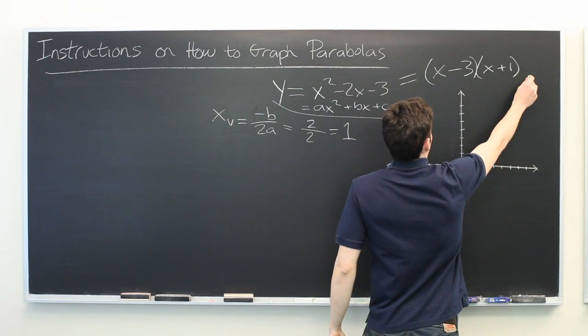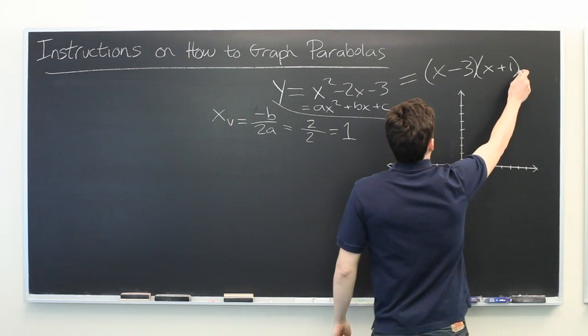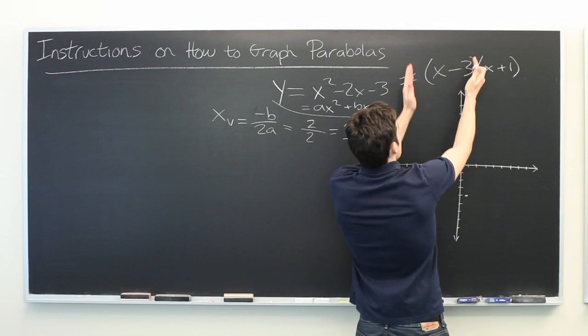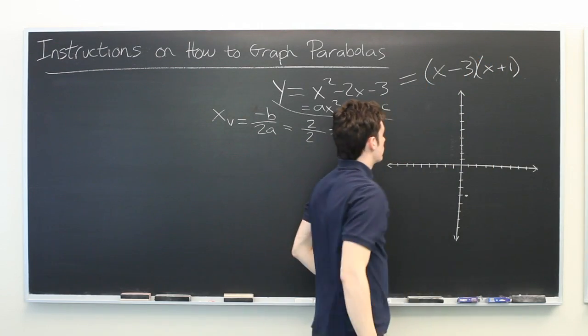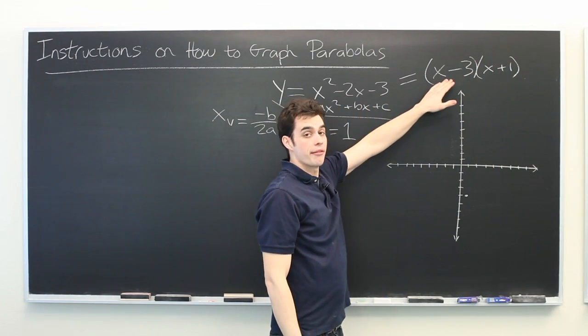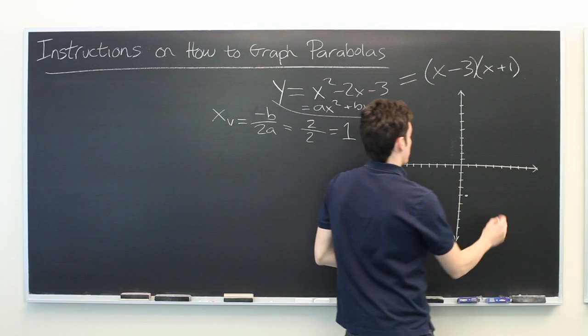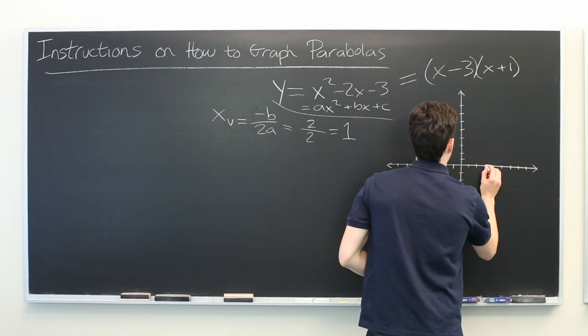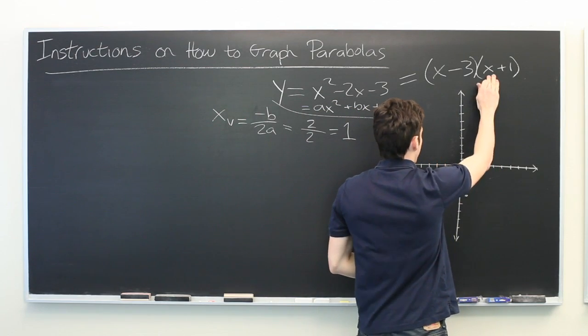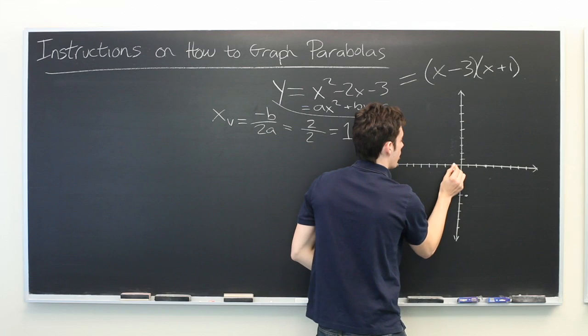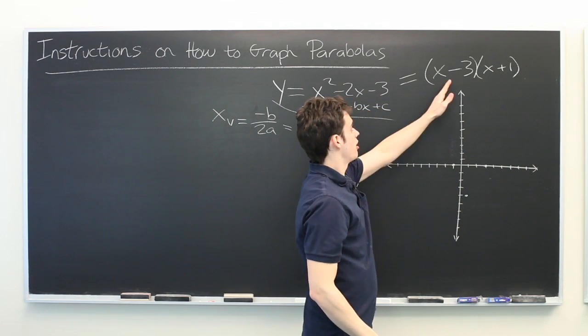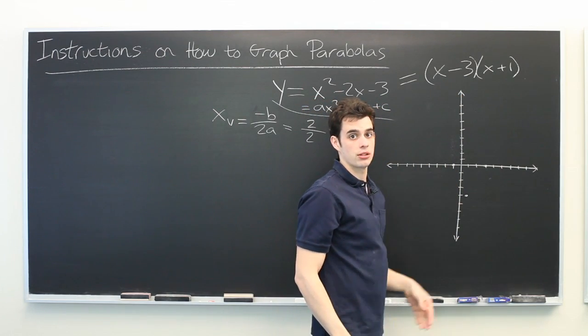Now this is zero when either of the two factors is zero. So that tells us that we have an x-intercept at x equals 3 and x equals negative 1, because those are the two numbers that make each of these two factors equal zero.